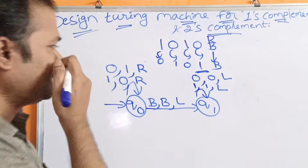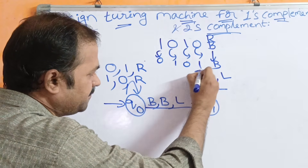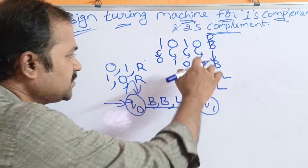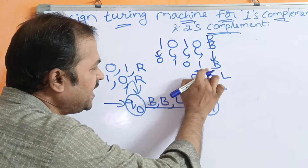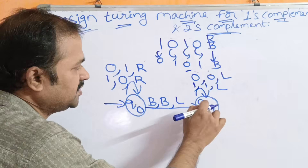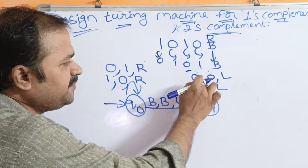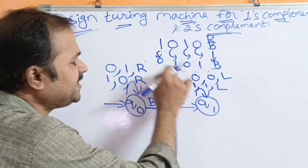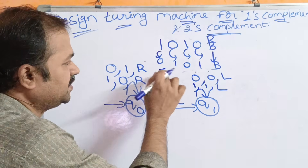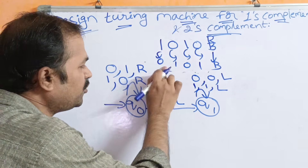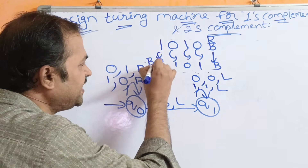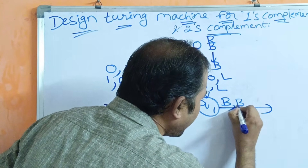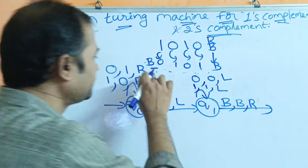On q1, if we read 1, keep it as it is and move the head towards the left. The number 1 0 1 0 has already been converted to 0 1 0 1 — we have the output. So we traverse back: don't change 1, move left; read 0, keep as 0, move left; read 1, keep as 1, move left; read 0, keep as 0, move left. Now we are at the blank symbol — on q1, keep blank as blank and move the head towards the right.